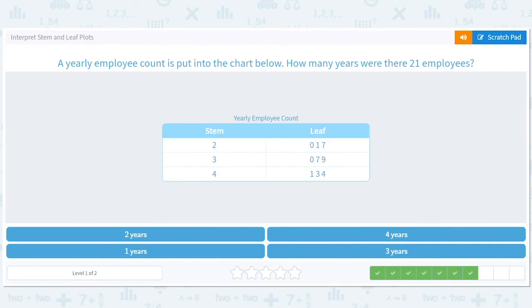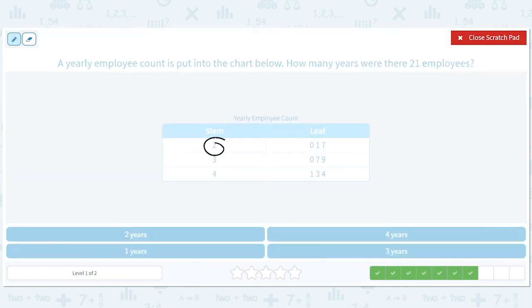A yearly employee count is put into the chart below. How many years were there 21 employees? Okay, same idea. Stem is two, there's only one one, so there was one year in which there were 21 employees.